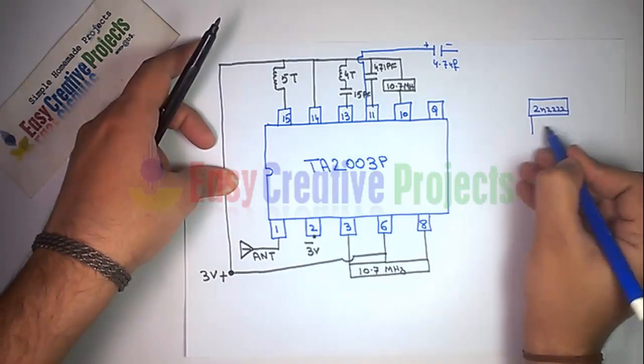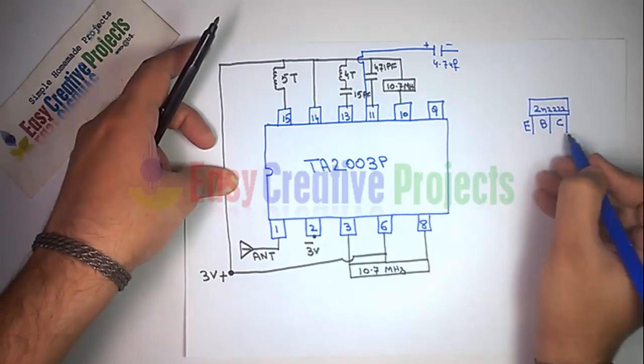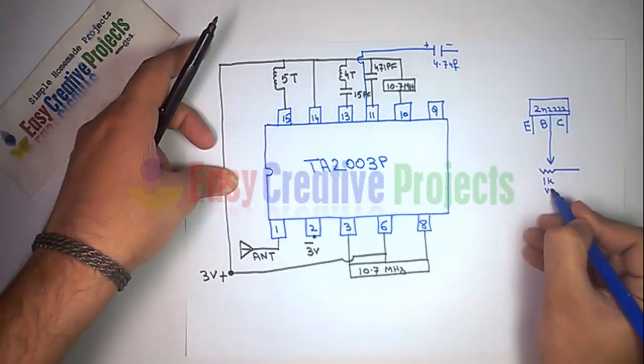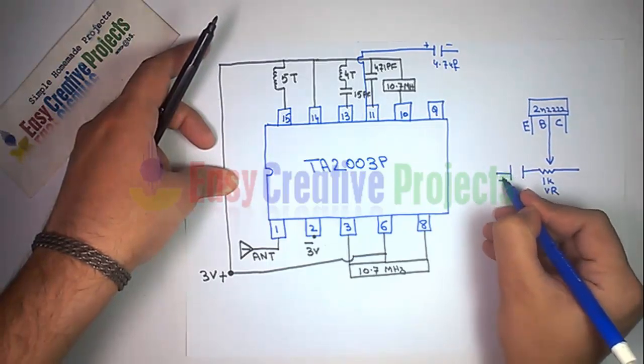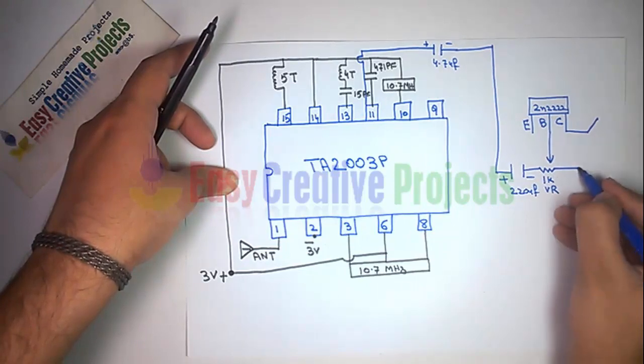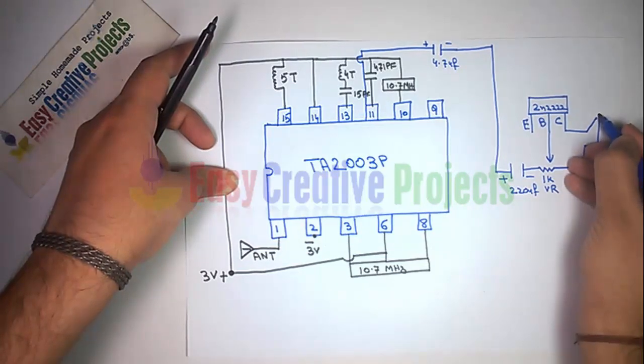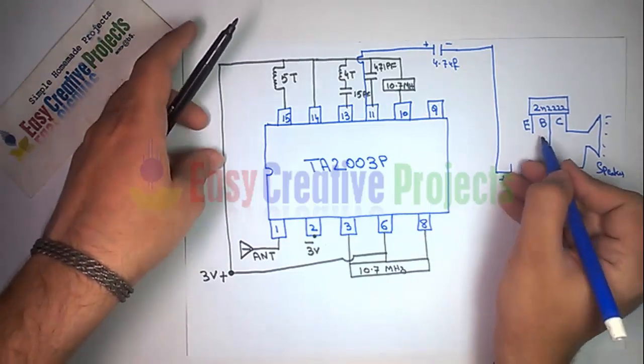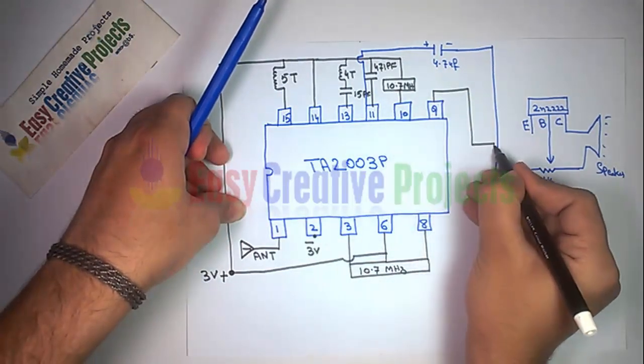2N2222A NPN transistor has 3 pins. Connect middle pin of variable resistor with base. Now connect 220 microfarad capacitor. Now connect speaker with collector pin and third pin of variable capacitor. Now connect emitter with pin 9.